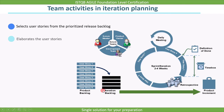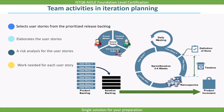The second point is, the team elaborates the user stories. Once the user stories are prioritized, the team goes through each user story and tries to elaborate it for more clarity. The third point is, the team performs a risk analysis for the user stories. And the last point is, the team estimates the work needed for each user story — that means effort for the user stories is calculated during iteration planning.